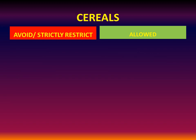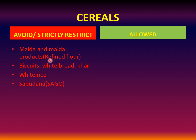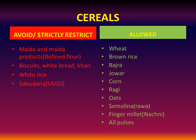Coming to cereals: maida and maida products — that's refined flour — have to be avoided or strictly restricted. Biscuits made from maida, white bread, white rice, and sabudana (commonly known as sago) have to be avoided. In the cereals, the allowed list is long: wheat, brown rice, bajra, jowar, corn, ragi, oats, semolina, finger millets, and all pulses can be taken.